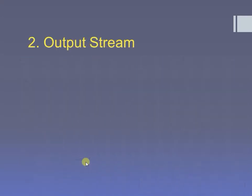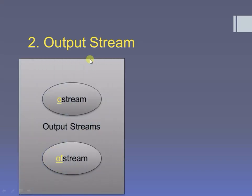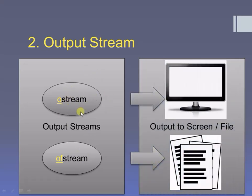The output stream is responsible to give the output. ostream and ofstream are the two output streams. ostream is responsible to give the output to the screen, and ofstream is responsible to write the output onto a file.